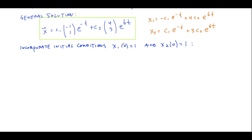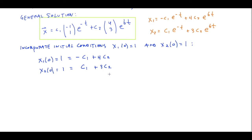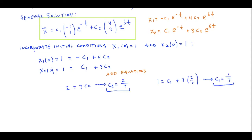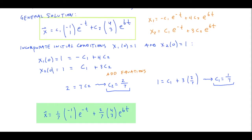These initial conditions say: plug t equals 0 into the first function and it should equal 1, and the same for the second equation. Plugging those t values in yields a little system in terms of c1 and c2 — a system of linear equations, just algebraic, that I'll need to solve to identify the specific values of c1 and c2. This is very similar to when we incorporated initial conditions back in Chapter 3. Doing a little algebra, I'm able to identify my c1 and c2 values. Plugging those into my general solution gives the actual solution for this initial value problem — one that not only solves my system of differential equations but also incorporates the given initial conditions.